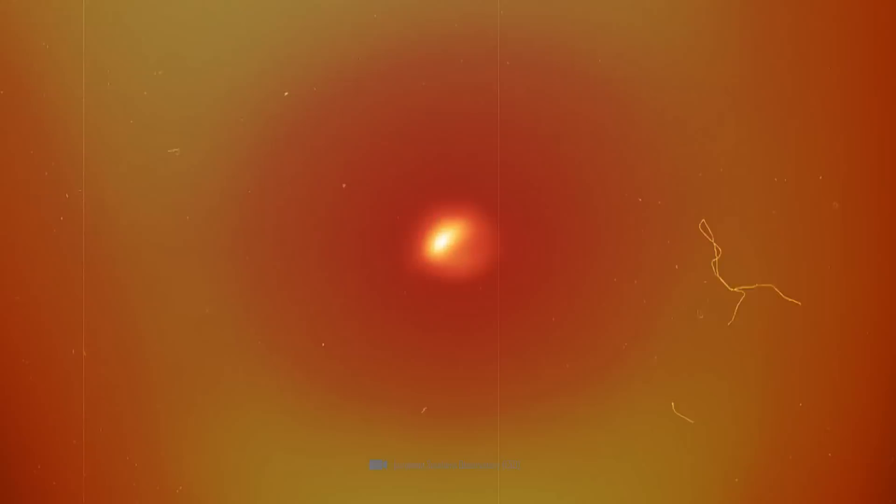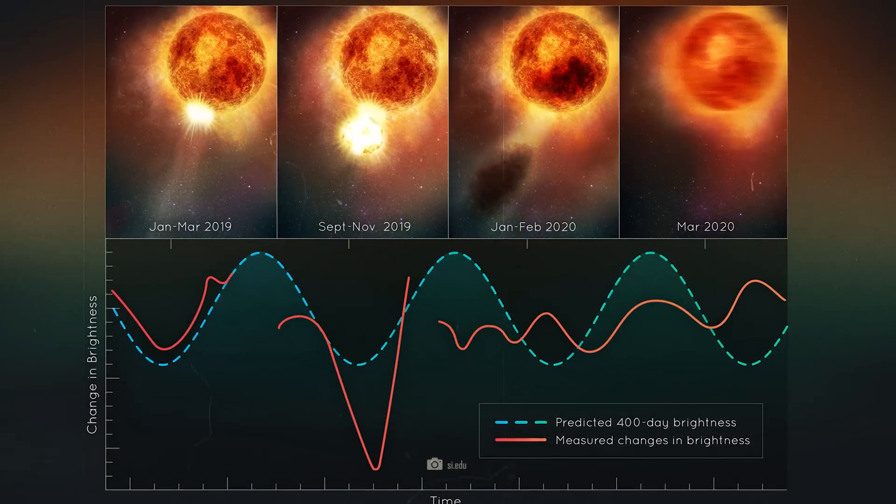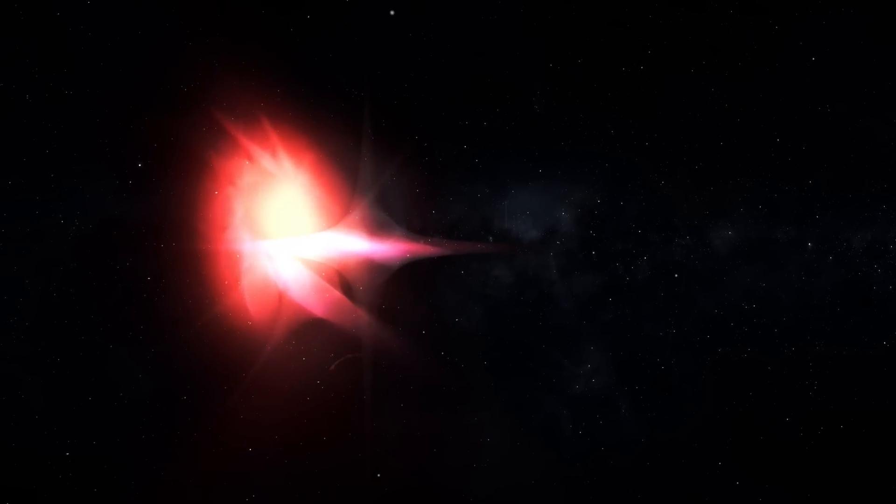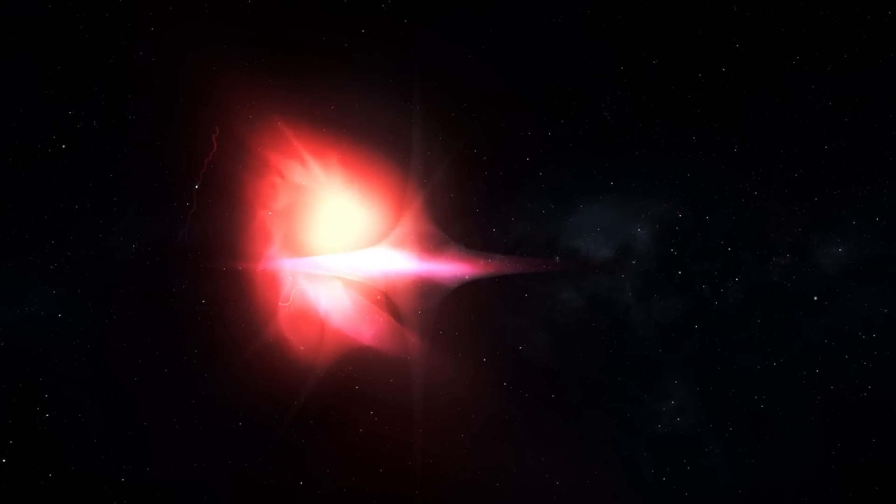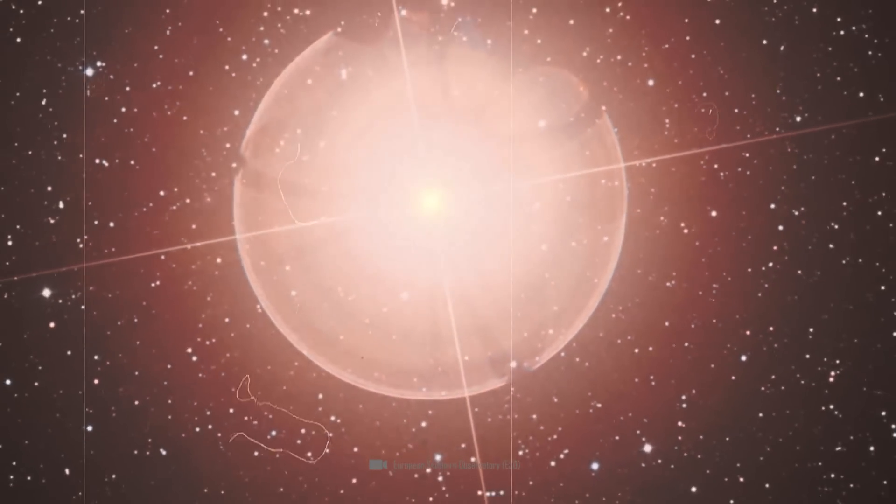It's incredibly exciting what is currently happening on Betelgeuse. In 2023, the red supergiant star once again showed a remarkable fluctuation in brightness. This time, the brightness did not decrease but increased. Almost from one day to the next, the star shone around 50% brighter, which is truly extraordinary.